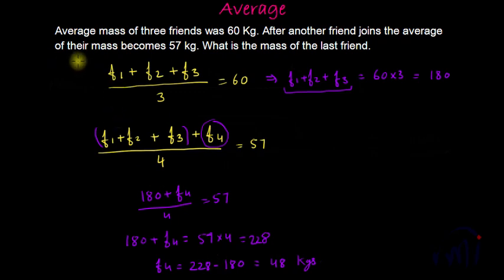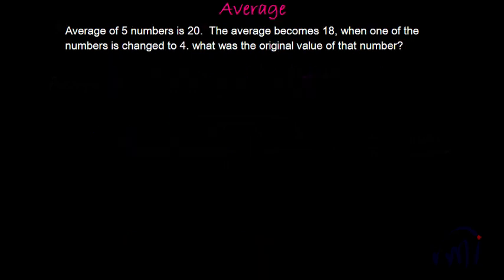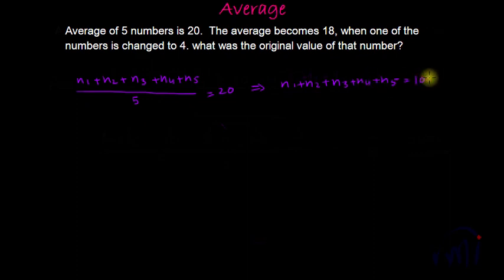You just have to do what the statement is saying and you can find the result within seconds. So let's take another question. The question is average of 5 numbers is 20. If you assume numbers as n1, n2, n3, n4, n5, then n1 plus n2 plus n3 plus n4 plus n5 divided by 5 is equal to 20, or you can say n1 plus n2 plus n3 plus n4 plus n5 is equal to 20 multiplied by 5, which is 100. The average becomes 18 if one of the numbers is changed to 4. What was the original value of that number?